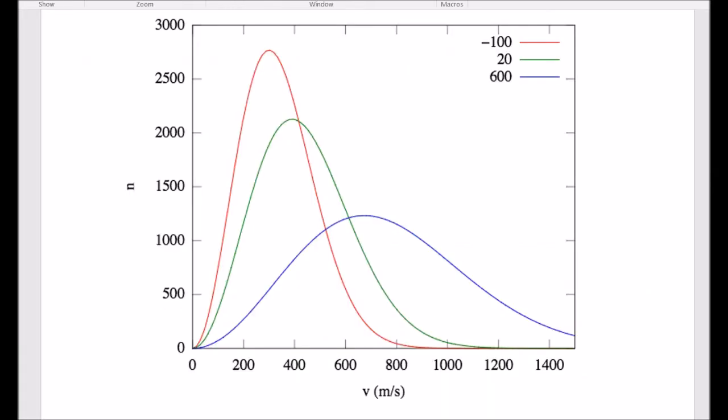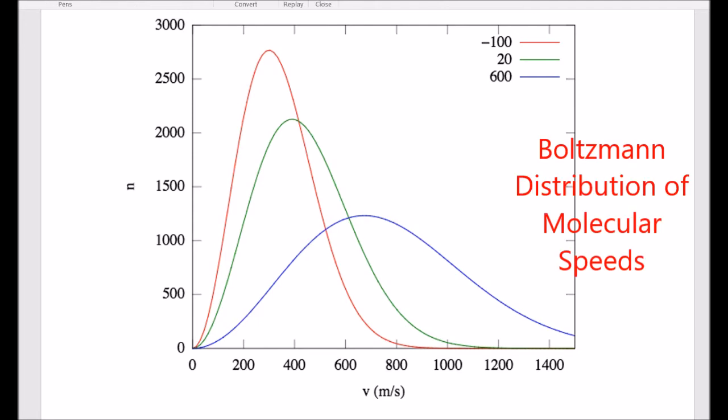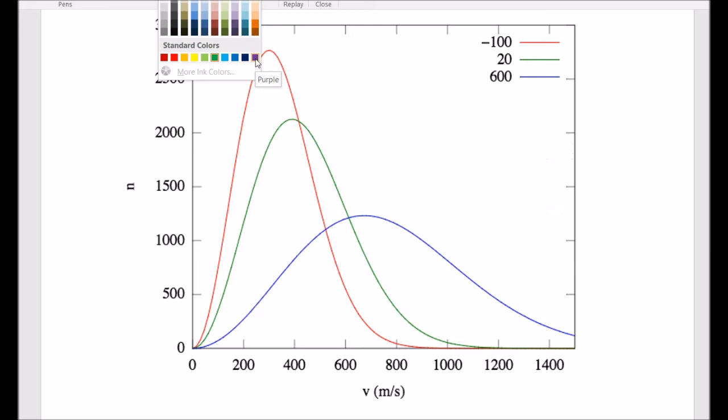This graph here is called a Boltzmann distribution. And it's used to represent the velocities, which is related to the kinetic energies, of a population of molecules. And here we have different temperatures. We have three different temperatures on the graph.